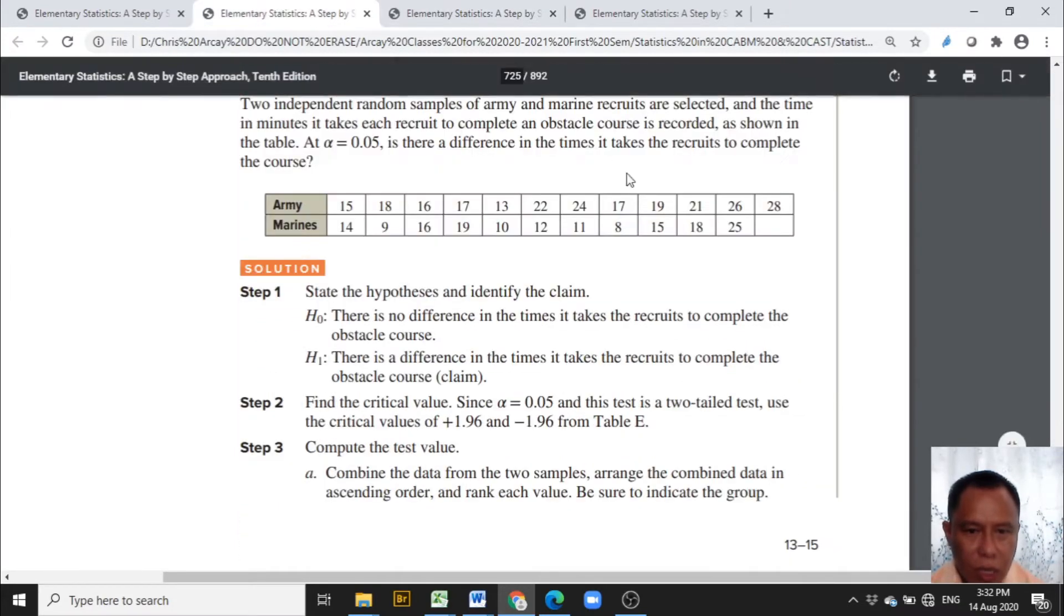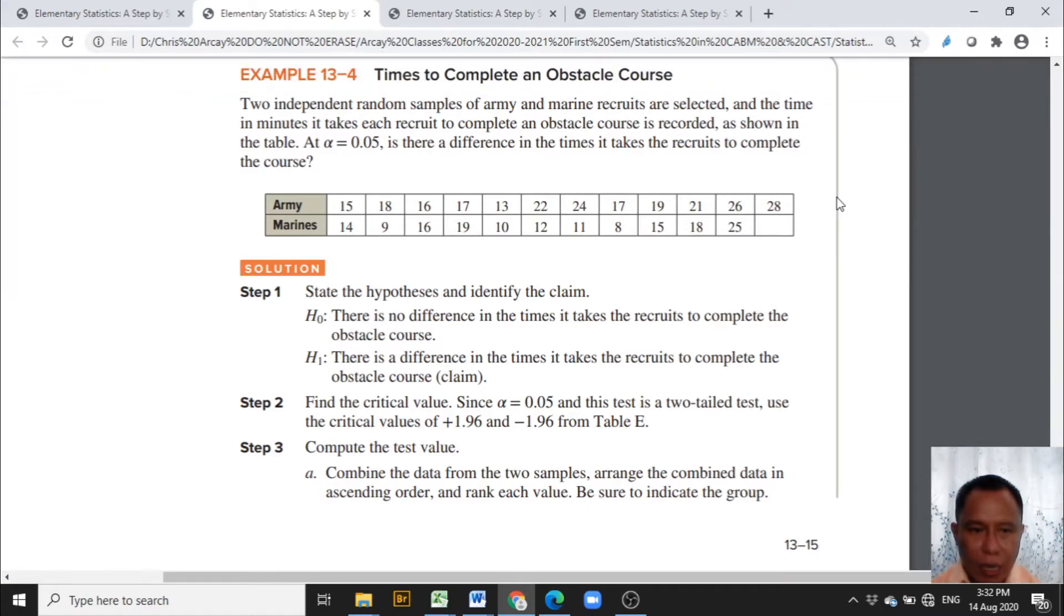Now, using the textbook of Alan Bluman entitled Elementary Statistics a Step-by-Step Approach copyrighted 2018, we will be using Example 13-4, entitled Times to Complete an Obstacle Course.